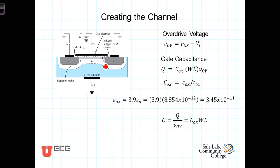These back-to-back diodes prevent current from flowing between the drain and source even when a voltage exists between them. The effective resistance between the drain and the gate under these conditions is on the order of 10 to the 12 ohms.